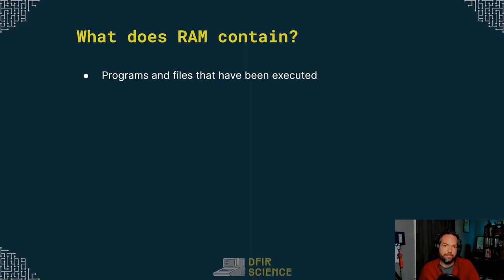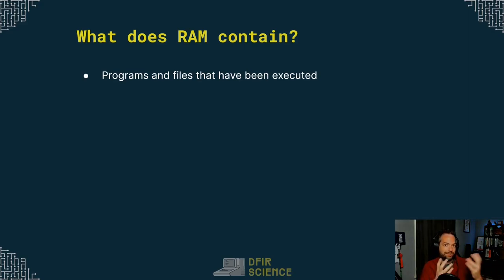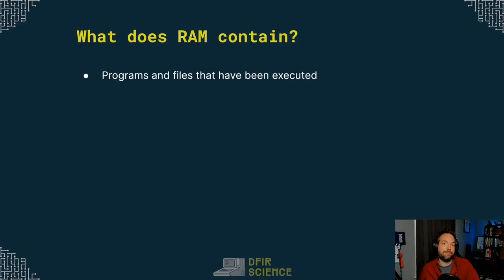Any programs and files that have been executed — think about files. Any file that you've opened today is probably still resident in your RAM right now, even if you closed the file. And that includes if you had an encrypted file or a password-protected file. If you opened that file and decrypted it or used the password to actually open it so you could see it, most likely that data is still resident in memory. We can recover it without the password and without encryption, so it's very important for data recovery.